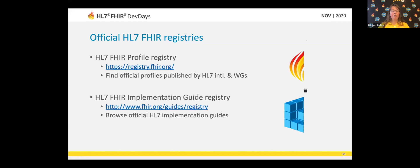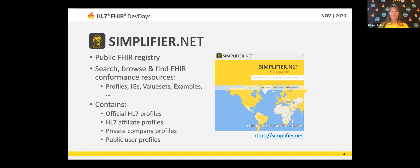It's really important to share and publish your work. The FHIR official registry is registry.fire.org — it's actually powered by Simplifier, so you will end up with a project on the Simplifier platform. It will list all of the official profiles published by HL7 and the work groups. If you're interested in any of those official profiles, go to registry.fire.org and search on them. For implementation guides, you can also find a registry on fire.org. All the implementation guides generated and created as websites are published on that registry link.